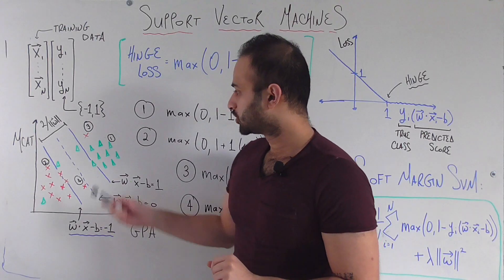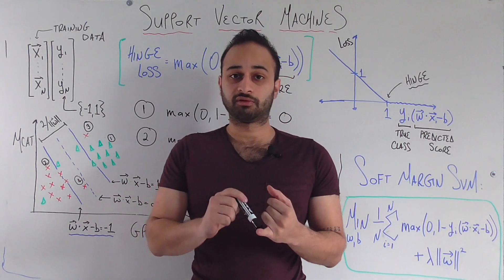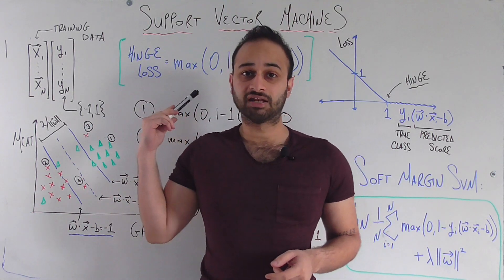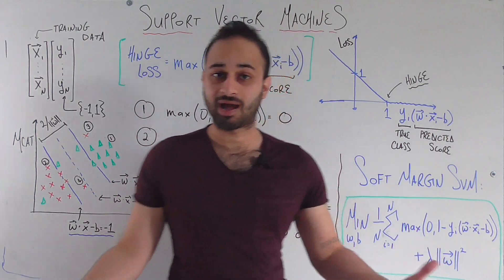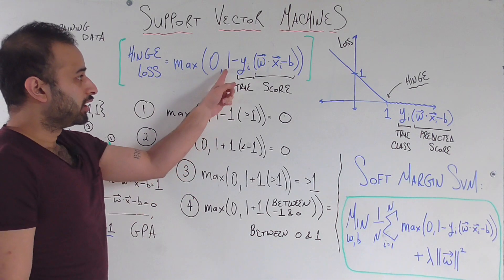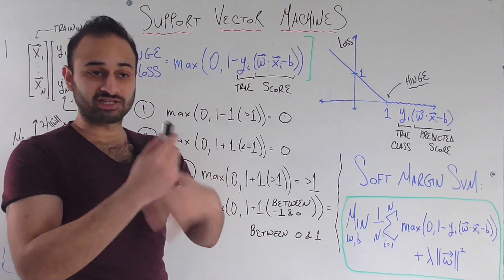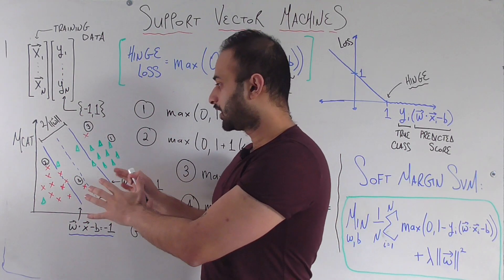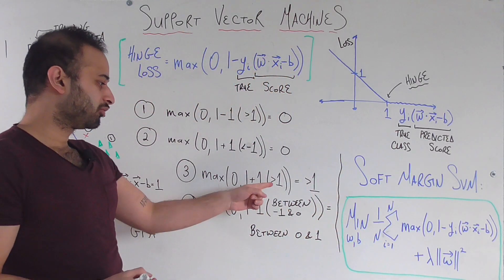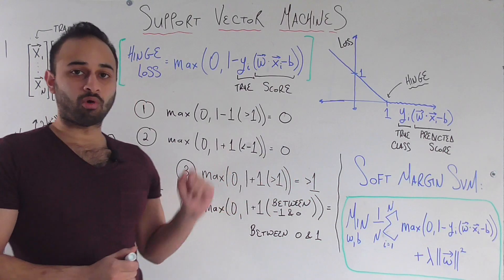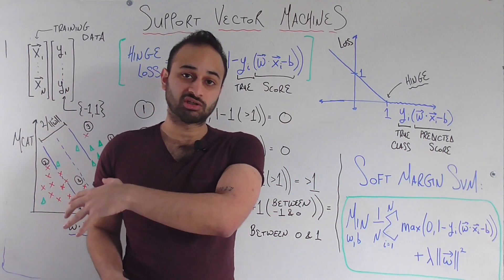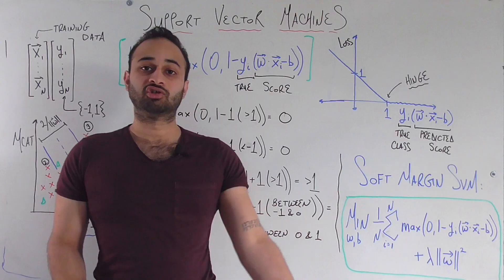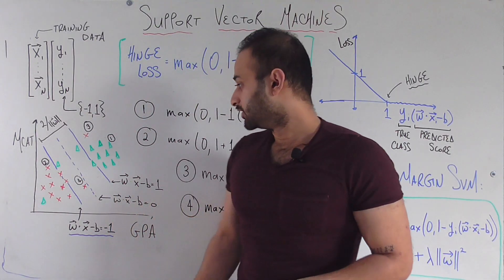Here's where the story gets more interesting — observation three is a student who does not get into medical school, but based on our current classifier they are categorized on the wrong side of the margin. Their hinge loss is max(0, 1 + score), where y_i = −1 flips the sign. Since they are on the positive side of the margin, their score is greater than one, so this quantity is greater than one — a significant penalty assigned to the model for misclassifying them.